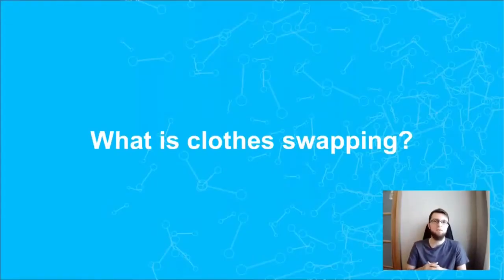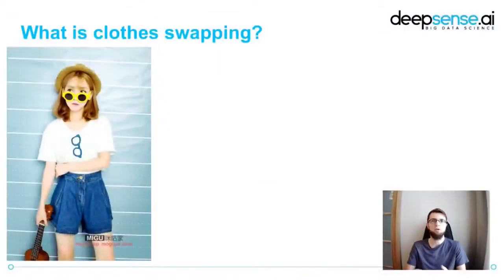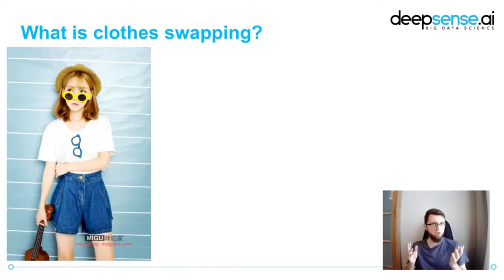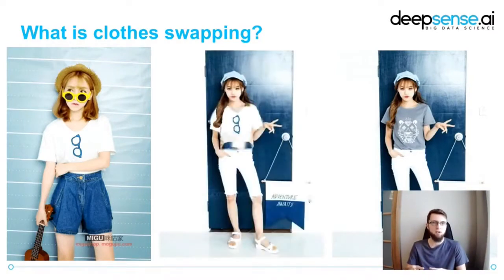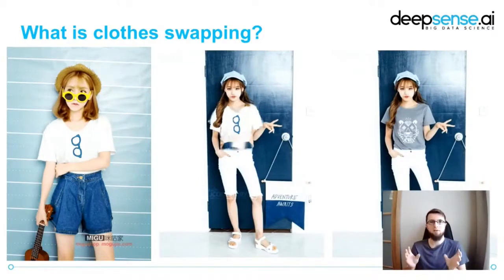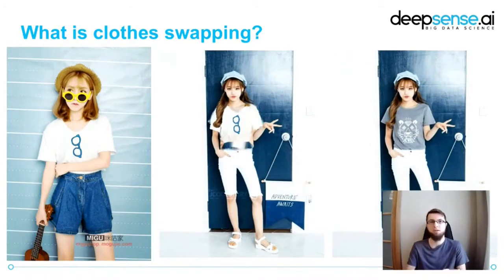So what is clothes swapping? Assume that you find or take a picture of a person wearing a t-shirt you like — we call it the source. And you also have a picture of you, which you call the target. We'd like to know if you would look nice in the same t-shirt. The goal is to transfer the t-shirt from the source onto the target person, and bear in mind that we only have those pictures — just two sets of pixels.